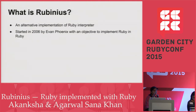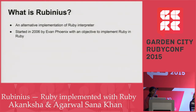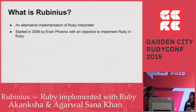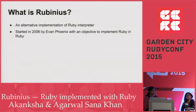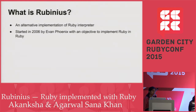Rubinius is an alternative implementation of the Ruby interpreter. It was started in 2006 by Evan when he realized that we need an implementation of Ruby which should be implemented mostly in Ruby, and it should be faster as well, because we mostly face the problem of Ruby being slow.